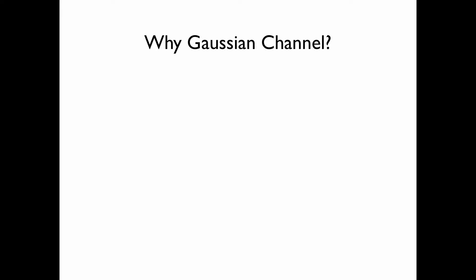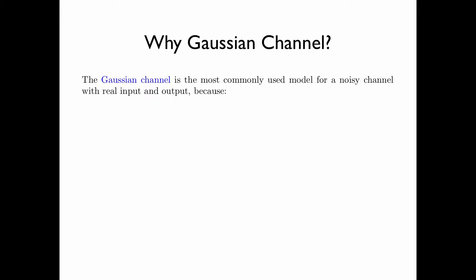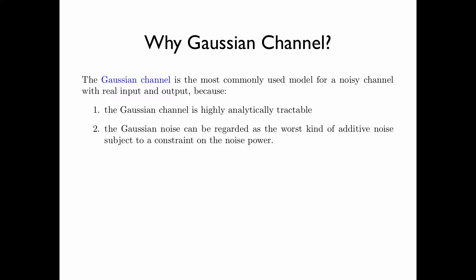In section 11.4, we discussed the memoryless Gaussian channel. Why do we study the Gaussian channel? The Gaussian channel is the most commonly used model for a noisy channel with real input and output for two reasons. First, the Gaussian channel is highly analytically tractable. And second, the Gaussian noise can be regarded as the worst kind of additive noise subject to a constraint on the noise power. This will be discussed later in the chapter.